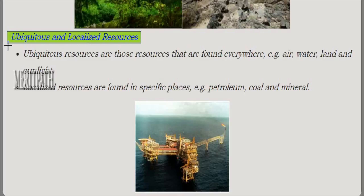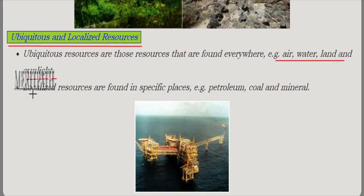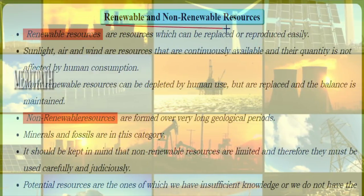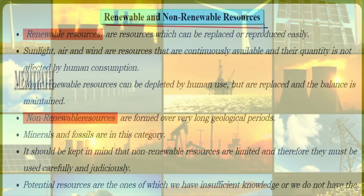Ubiquitous and localized resources: ubiquitous means present everywhere — resources like air, water, land, and sunlight which are not limited and can be found everywhere on this planet. Localized means restricted to a particular location — resources that can be found only in specific locations, like petroleum, minerals, etc.